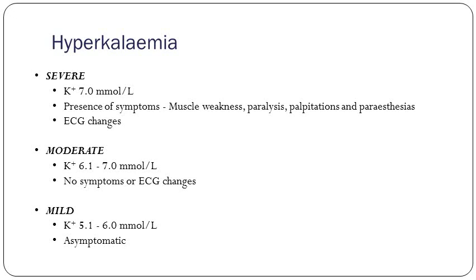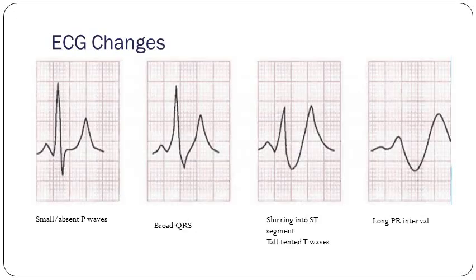Hyperkalemia — three levels. Severe: potassium greater than 7, patient is symptomatic — muscle weakness, paralysis, palpitations — and they'll have ECG changes: small or absent P waves, broad QRS complexes, classic tall tented T waves, and long PR interval. Moderate: 6.1 to 7 — can be asymptomatic with ECG changes. Mild: 5.1 to 6 — tends to be asymptomatic. We tend to treat on the ward if it's above 6.